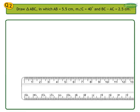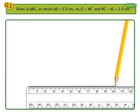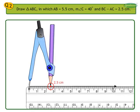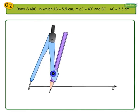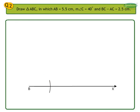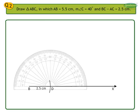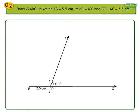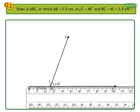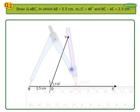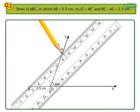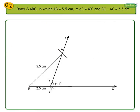First, draw ray BX as the base of the required triangle. Take the given measure of BC minus AC on ray BX. With B as center and 2.5 cm radius, draw an arc on ray BX and mark this point as D. Draw ray DY such that measure angle BDY is equal to 110 degrees. Take B as center and with radius 5.5 cm, draw an arc intersecting ray DY at point A. Join points A and B. Now draw the perpendicular bisector of segment AD.